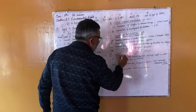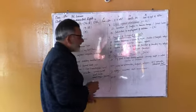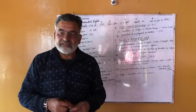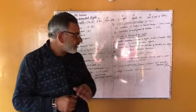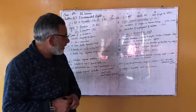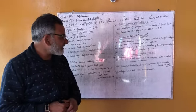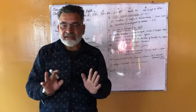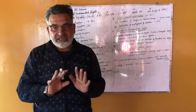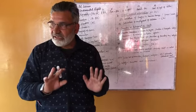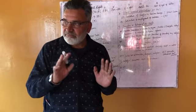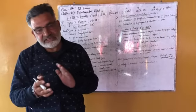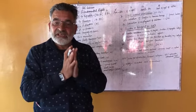The fifth fundamental right is cultural and educational rights, under Article 29 and Article 30. Under Article 29, any group or section having a distinct language, script, or culture can maintain their culture, conserve their language and script, in order to save their heritage.